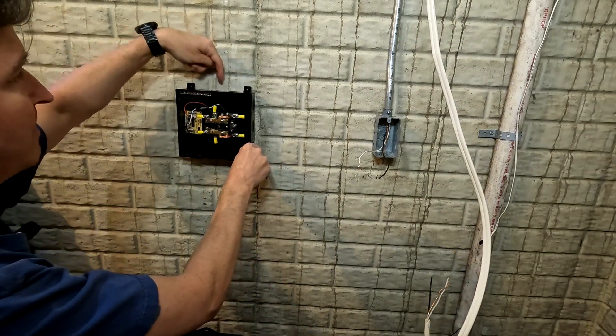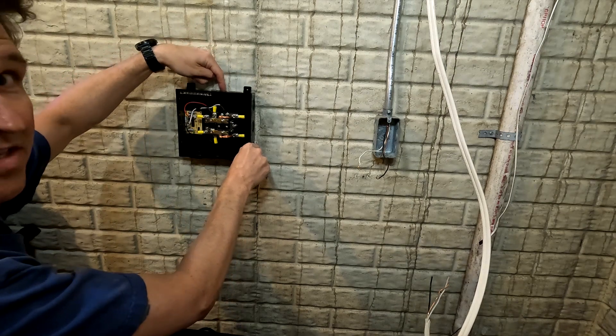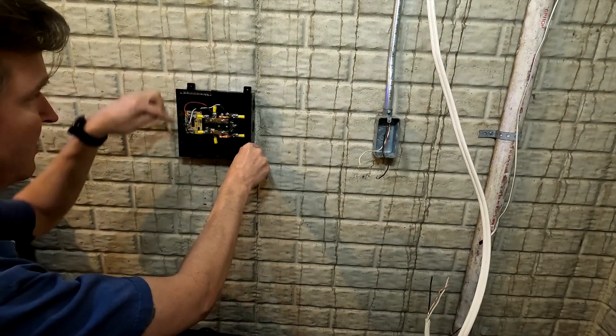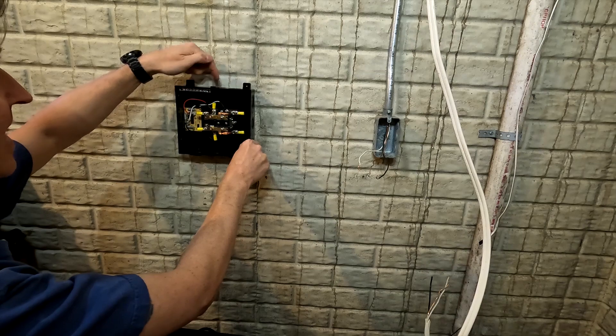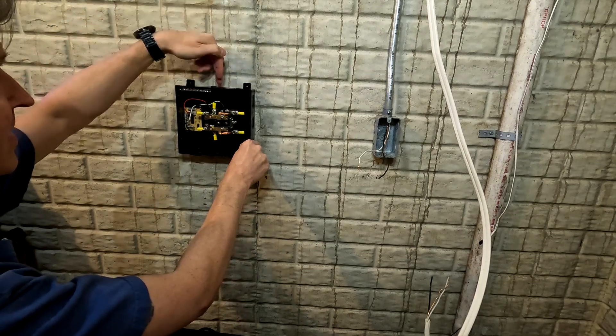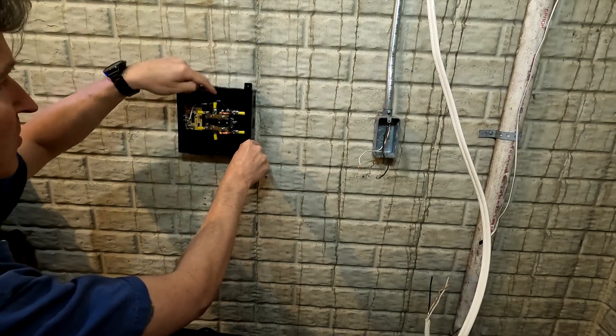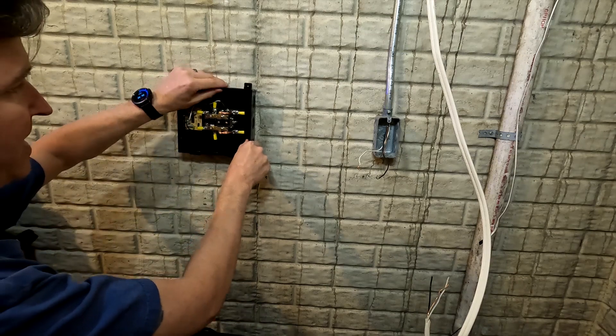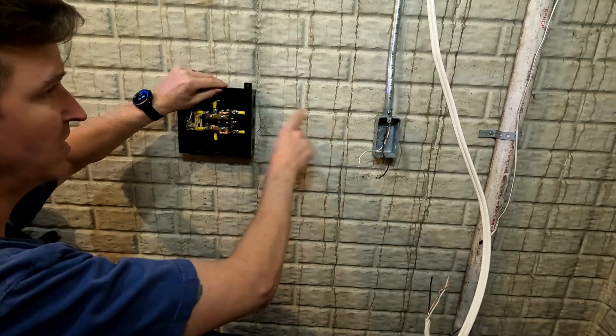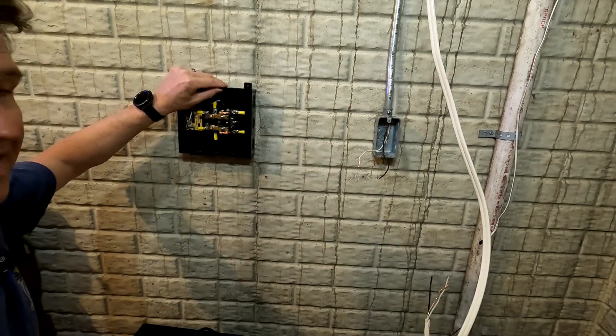I'm going to have a conduit going into the top right here which is going to feed my house circuit and my off-grid circuit into the same conduit. Those are both going to feed in, and then I'm going to have a conduit coming out here which is going to feed this plug. That's the plan.